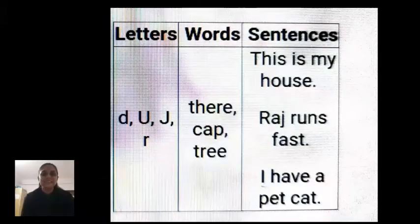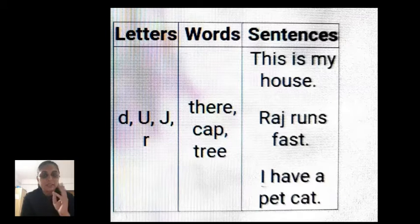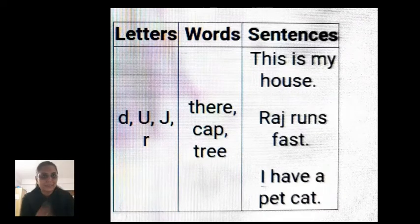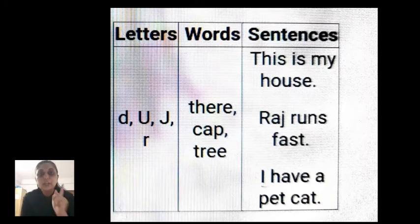Check your answers. Letters: d, u, j, r. Words: there, cap, tree. And there are three sentences: 'This is my house,' 'Raj runs fast,' 'I have a pet cat.' In each sentence, the first letter is capital — This has capital T, Raj has capital R, and I have a pet cat has capital I — and at the end there is a full stop. Don't forget to do it nicely and carefully.